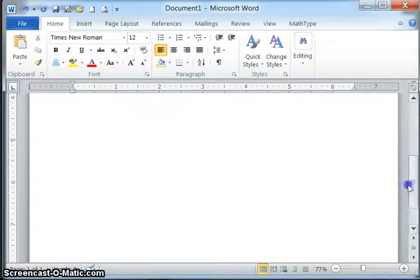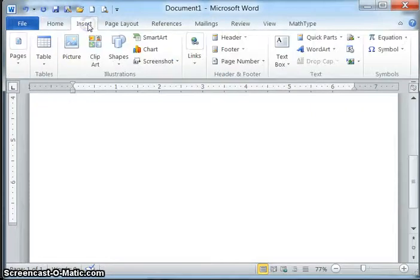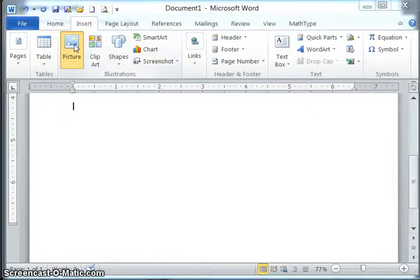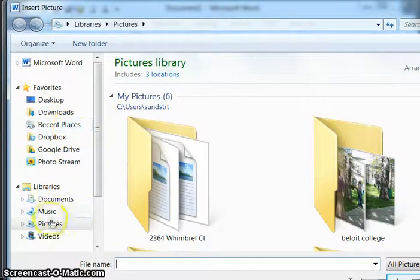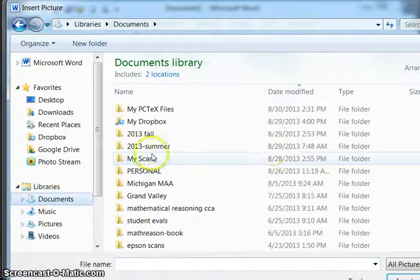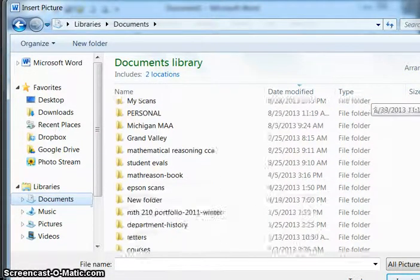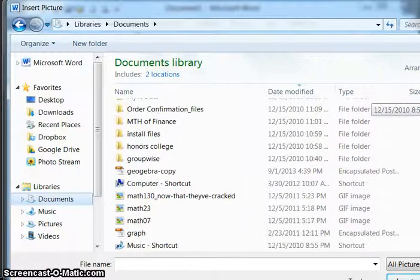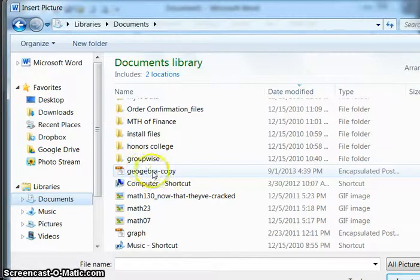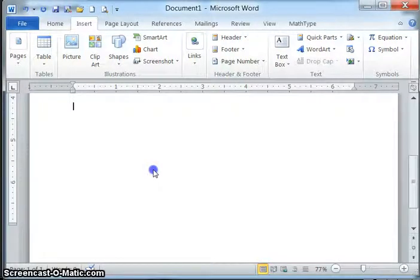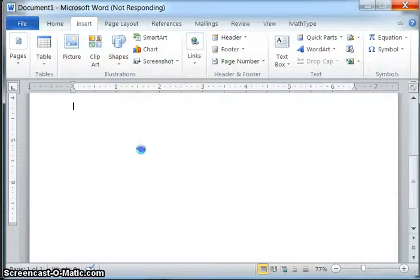And again, if I'm in a word processing document or some other program, I can still paste that in here. And this will be dependent upon the word processor that you use. So here I have insert picture. It'll probably go right to my pictures folder, but we'll go to documents and search for the correct document. There it is, geogebra copy. Double click that.